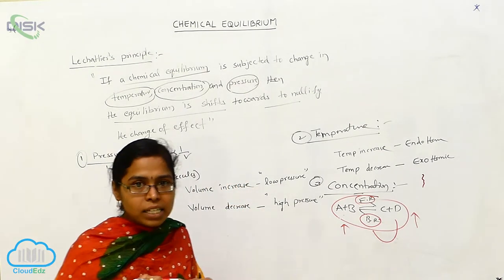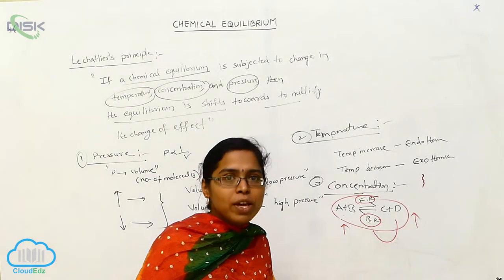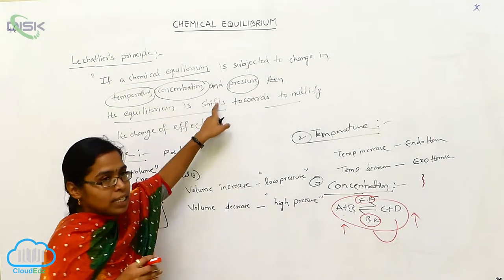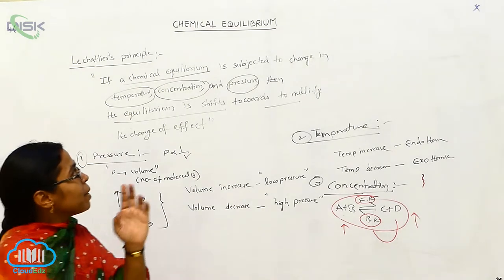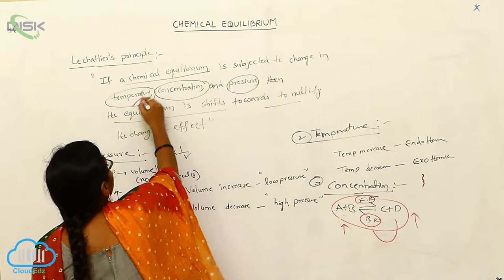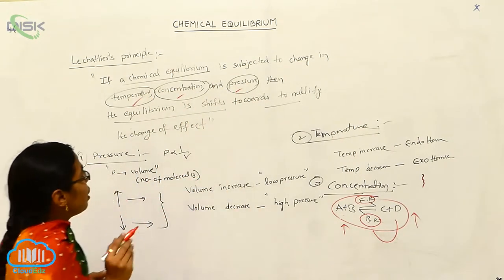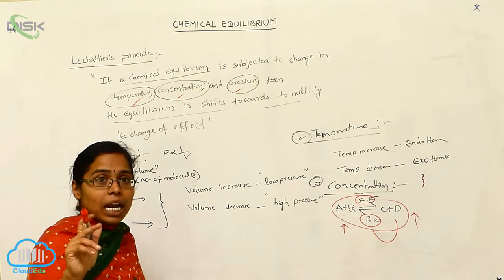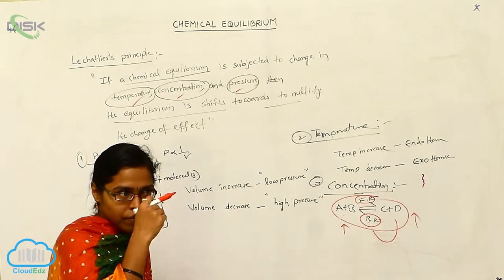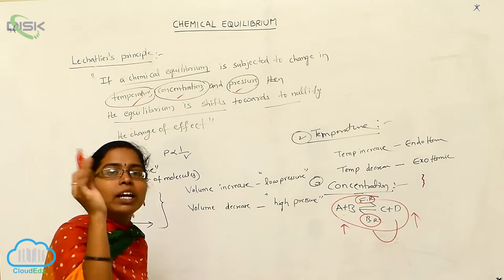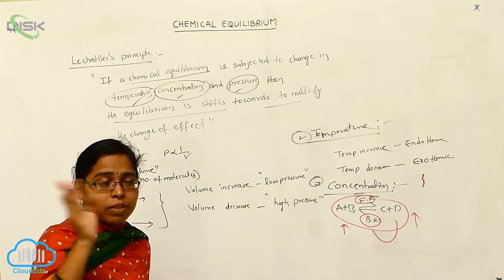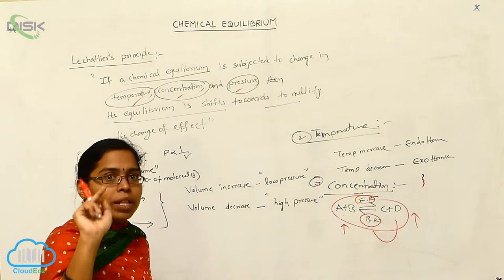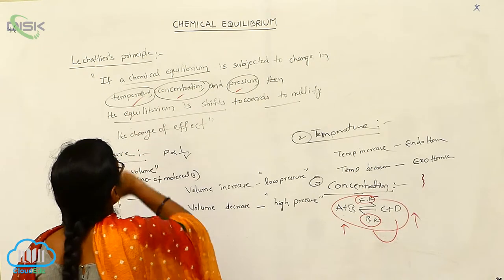There are mainly three effects, and the catalyst effect is also there. However, the catalyst effect has no special effect upon chemical equilibrium, which is why it is not mentioned here. So the definition is: if a chemical equilibrium is subjected to a change in temperature, concentration, or pressure, then the equilibrium shifts to nullify the change — meaning it cancels the increased part.